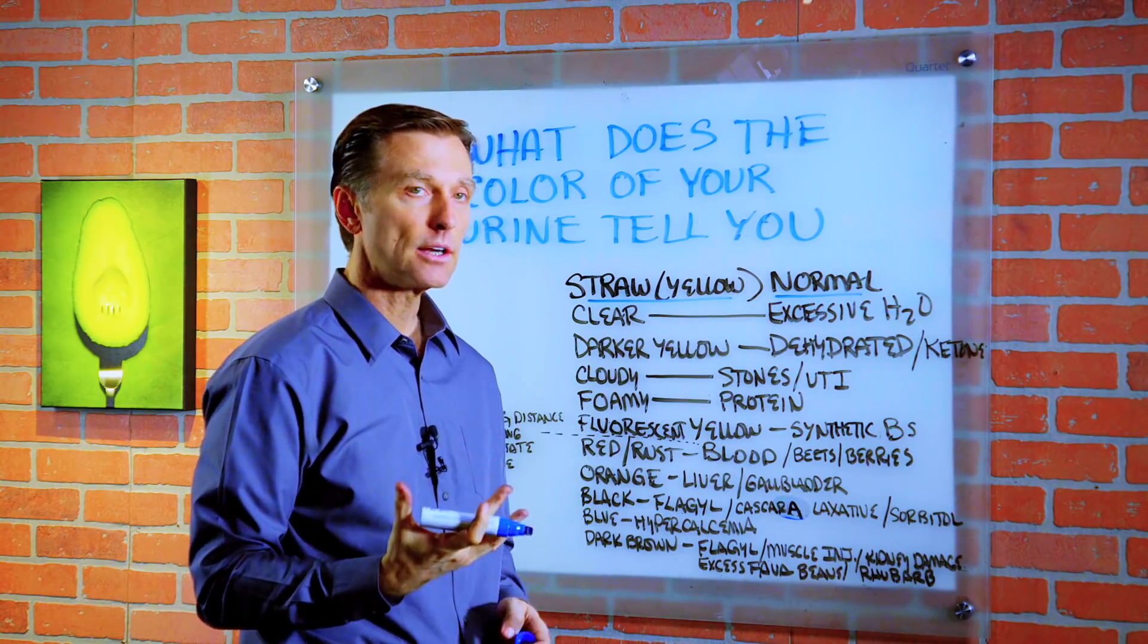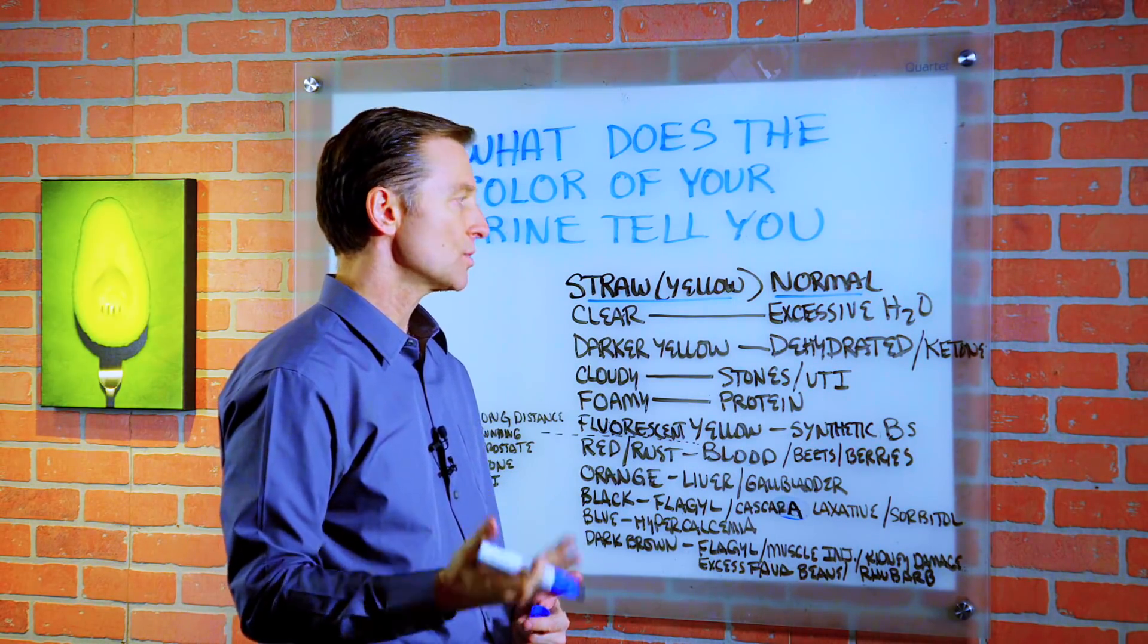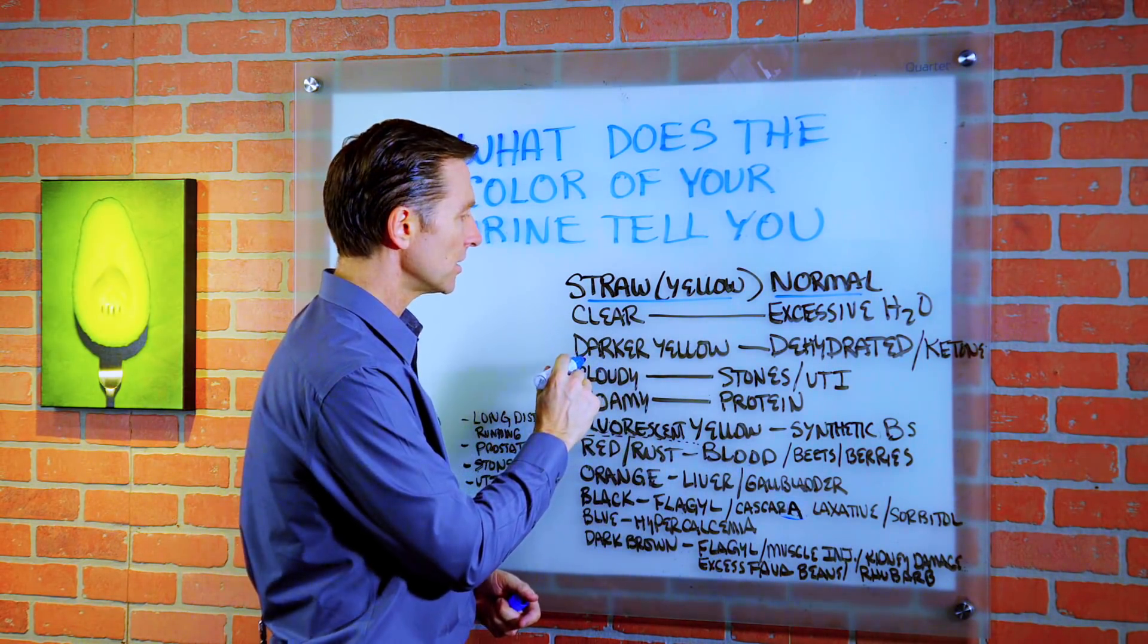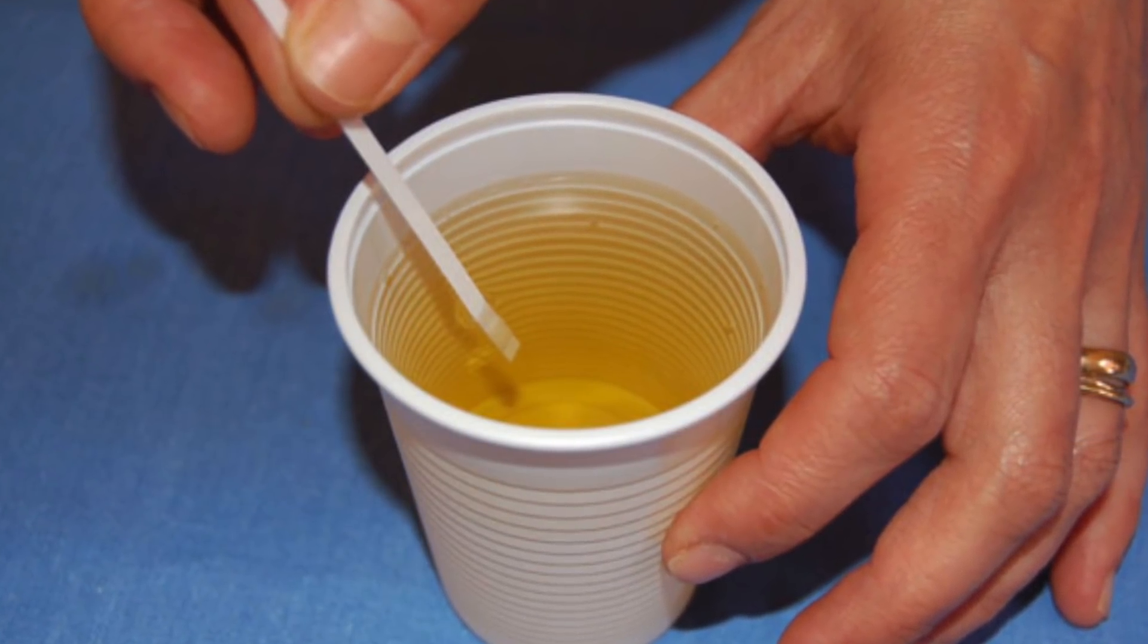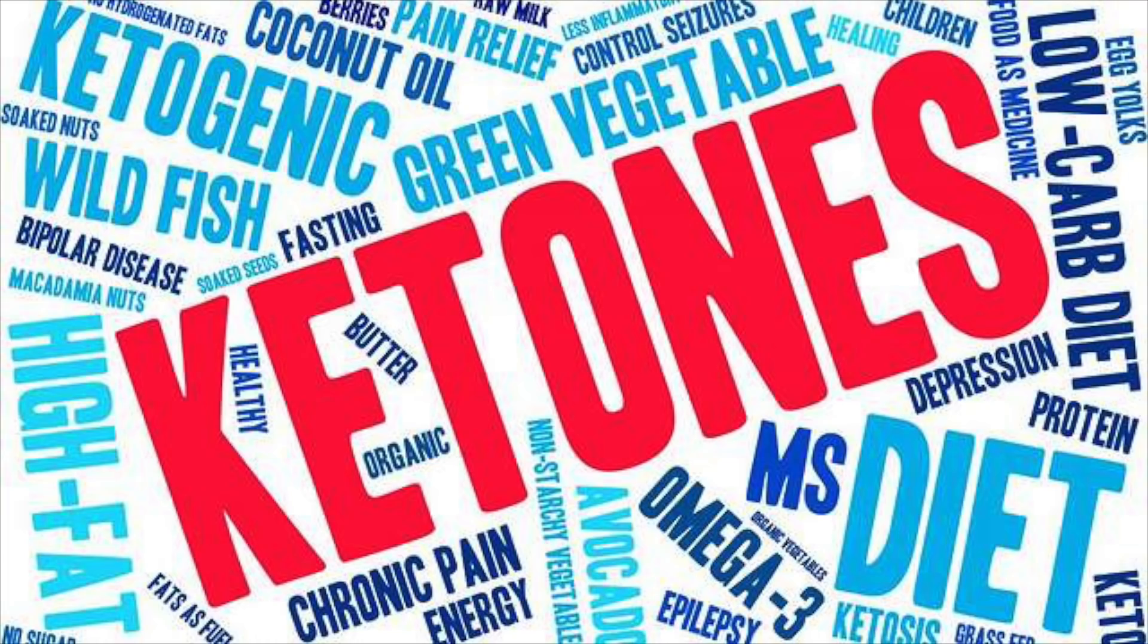If it's clear, that means you're drinking too much water. If it's darker yellow, that could mean you're dehydrated and you need to drink more water, or you have ketones in the urine.